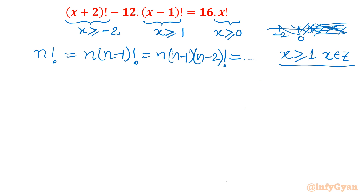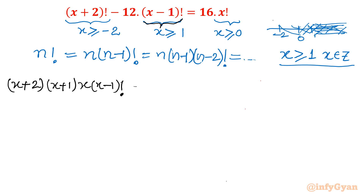Let me apply the recursive formula to (x+2)!. We need to expand it down to the least factorial value present, which is (x-1)!. So (x+2)! becomes (x+2)(x+1)(x)(x-1)!. Then minus 12 times (x-1)!, equal to 16 times x times (x-1)!. Now we can see that (x-1)! is common, so we can divide through by (x-1)!.